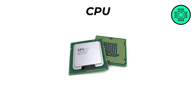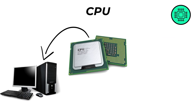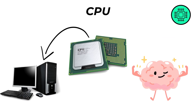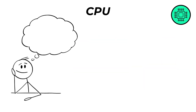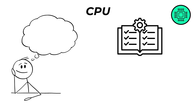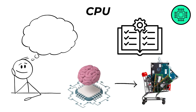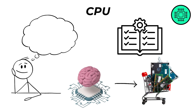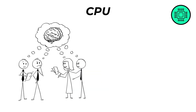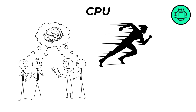CPU — this is the computer's main brain. It does all the thinking, follows instructions, and tells the other parts what to do really fast. Just like your brain helps you think and act, the CPU runs the whole show inside the computer.